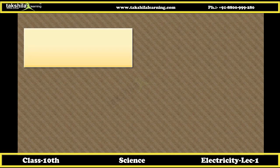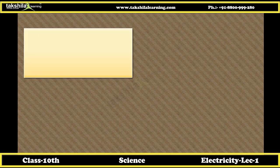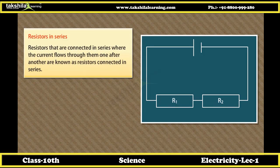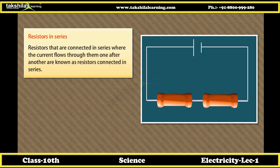Combination of resistors. Combinations of resistors are of two types: resistors in series and resistors in parallel. Resistors in series are connected such that current flows through them one after another. Here, the current depends on the applied voltage, the number of components, and the nature of components in the circuit.